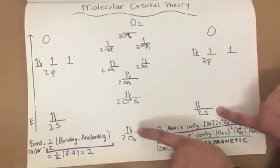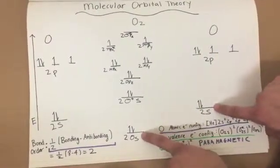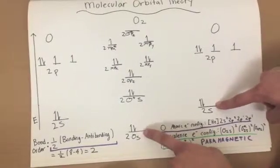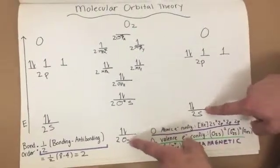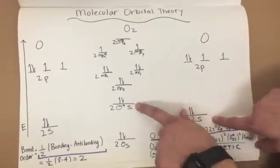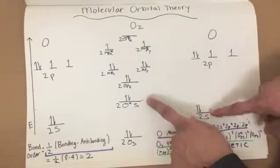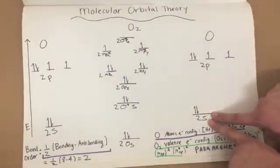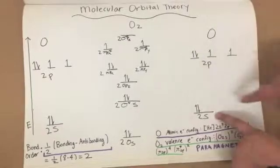The bonding orbital is lower in energy than the original orbital and thus it stabilizes the molecule. However, the antibonding orbital is higher in energy than the original orbital and thus destabilizes the molecule.